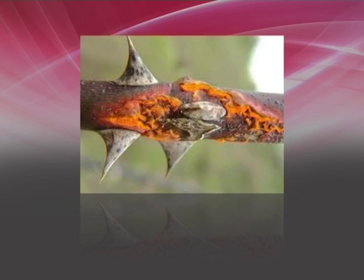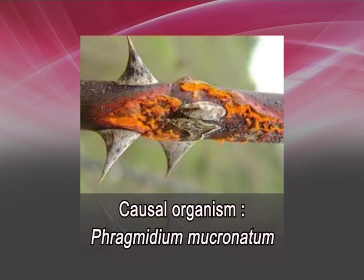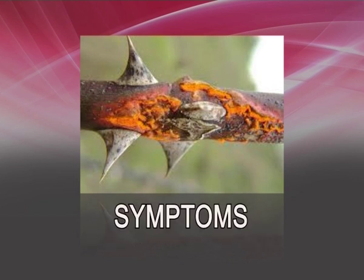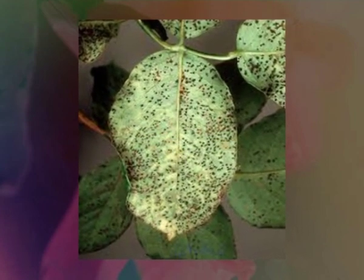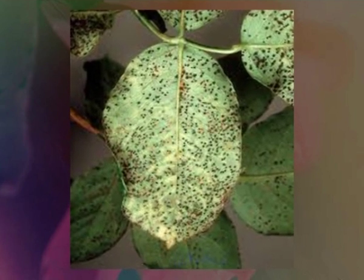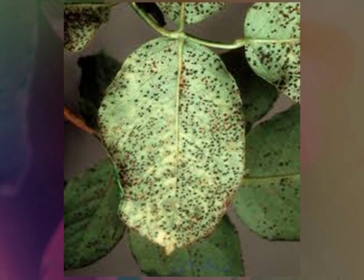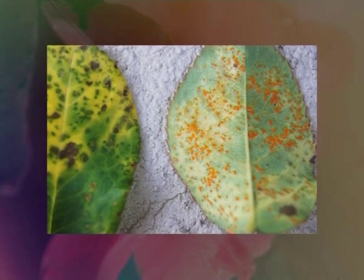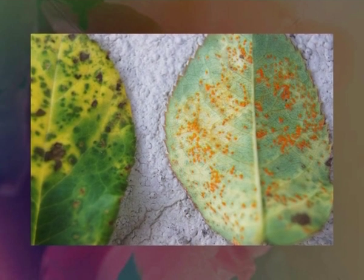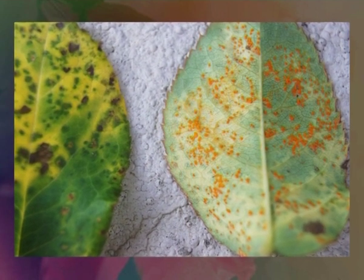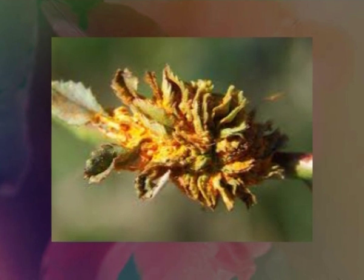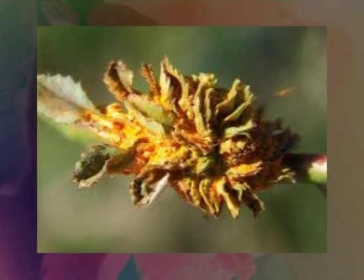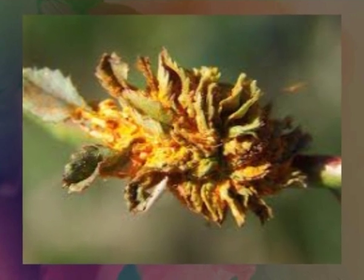The next important disease is rust. It is caused by Phragmidium mucronatum. Symptoms: rust first shows itself as small rust-colored spots on the undersides of leaves, eventually becoming visible on the upper sides as well as this fungal disease gains control. Infected plants have small orange pustules on the underside of leaves, while the upper sides of leaves may discolor and drop.